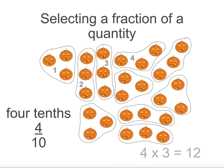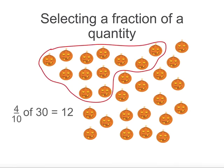Then I select 4 groups. So 4 lots of 3 equals 12. So 4/10 of 30 is 12.